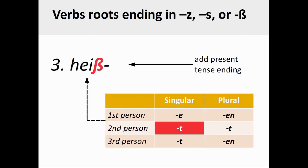Likewise, for verbs ending in Z, S, or Eszett, the basic conjugation pattern is slightly modified in order to make the verbs more pronounceable. In the example you see on the screen, the verb heißen, meaning 'to be called,' has a root ending in Eszett. In this case, the S in the second person singular ending -st is dropped.